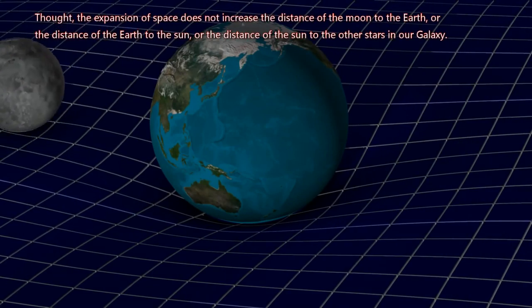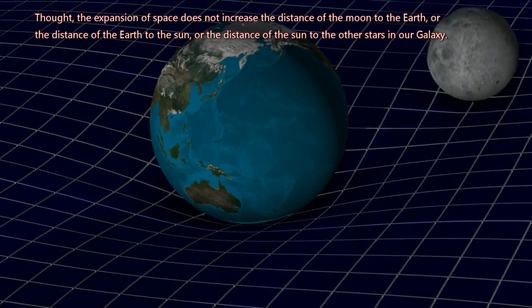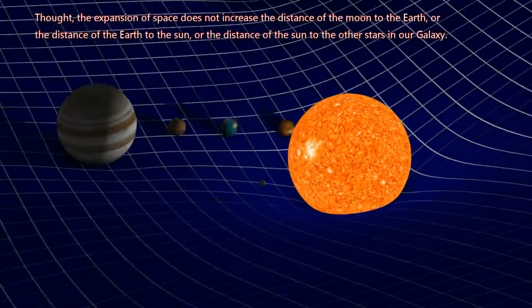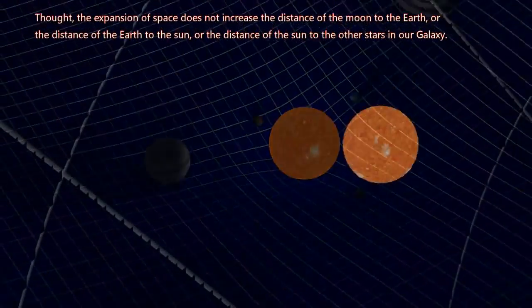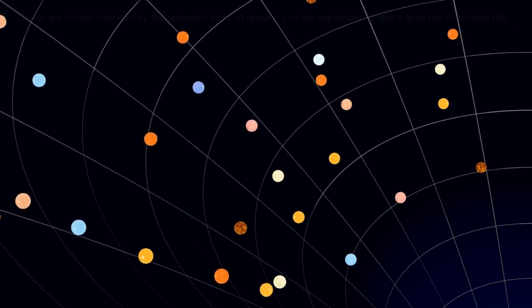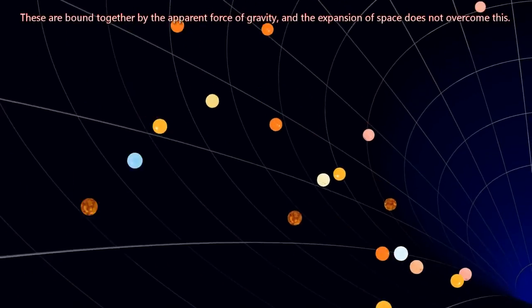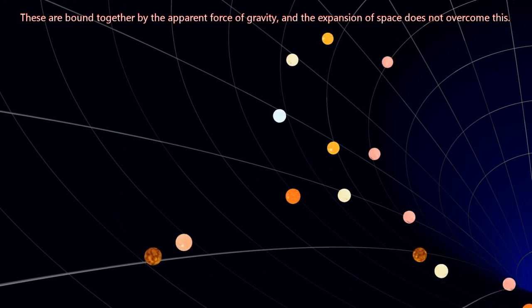The expansion of space does not increase the distance of the Moon to the Earth, or the distance of the Earth to the Sun, or the distance of the Sun to the other stars in our galaxy. These are bound together by the apparent force of gravity, and the expansion of space does not overcome this.